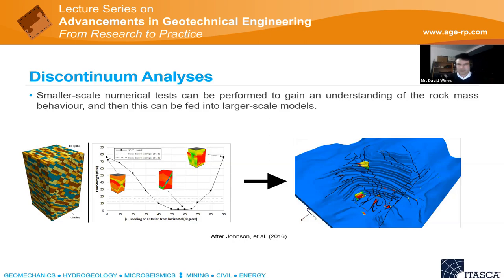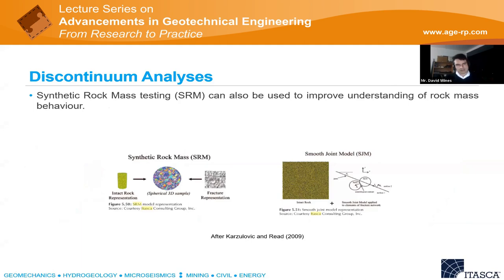For example, on the left we have a numerical triaxial test in 3DEC with quite a lot of structure — maybe 10 meters high and 5 by 5 meters in plan — used to understand rock mass strength with loading in different directions. Then on the right, we use something like FLAC 3D to analyze the actual slope, which might be 300 meters high. This is similar to the synthetic rock mass approach, where you create a numerical sample of the rock with intact material, joints, and veining, do smaller-scale component tests to understand rock mass behavior, and feed those into larger-scale models.